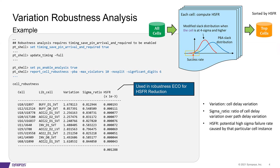The cell robustness report is generated by a report cell robustness command, and the report is shown at the bottom. The cells are sorted based on this HSFR.